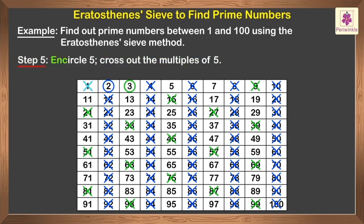Step 5: Encircle 5. Cross out the multiples of 5. Step 6: Encircle 7. Cross out the multiples of 7.